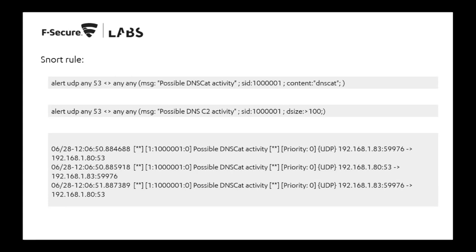Running these rules does produce alerts for possible dnscat activity. DNS detection and execution is pretty simple and straightforward, but it's something many security programs don't look for by default. It's a simple control you can implement that might save you if an attacker has established a DNS backdoor and is trying to re-enter after you've quarantined them.